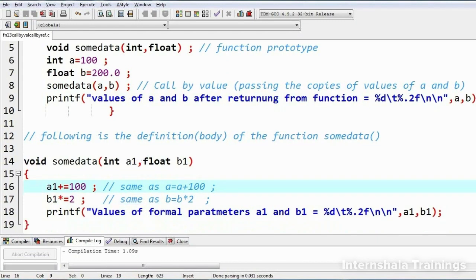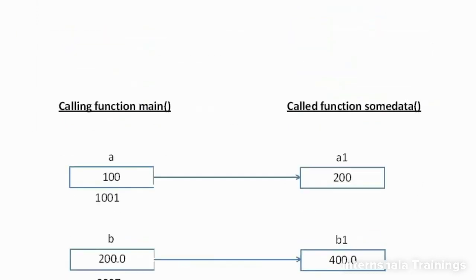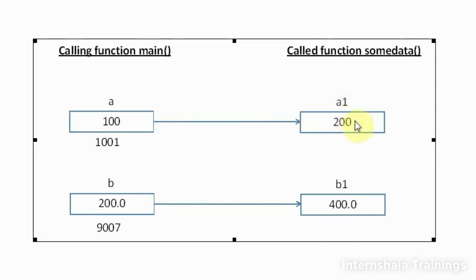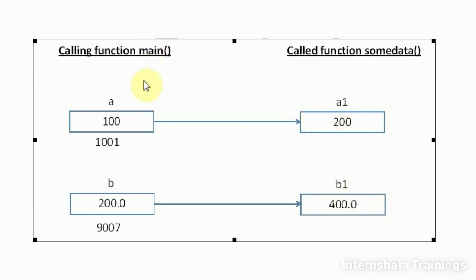I've written a1 += 100 and b1 *= 2 using compound assignment operators, which will change the values of the formal parameters. I am then printing the values of formal parameters a1 and b1. After the changes, a1 will become 200 and b1 will become 400. There isn't going to be any change into a and b because a1 and b1 are just photocopies of a and b — stored differently in memory and local to 'someData'. Any change made into them will not reflect upon the actual arguments. So printing a1 and b1 in the called function gives 200 and 400, but when control returns to main, printing a and b will still give 100 and 200.